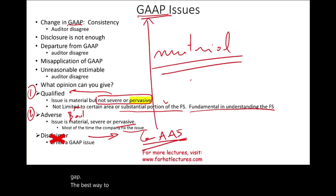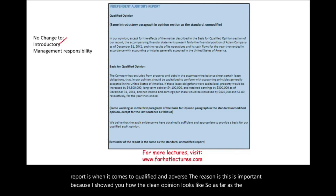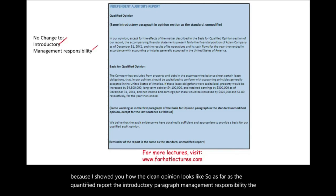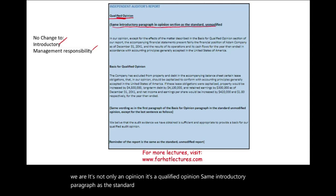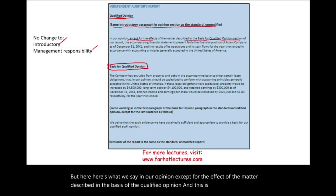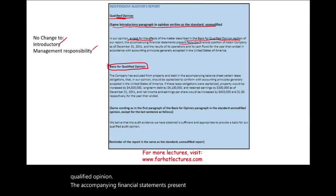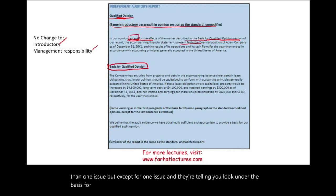Looking at an actual qualified opinion report: the introductory paragraph, management responsibility, and auditor's responsibility sections do not change from the standard report. The opinion paragraph is titled 'Qualified Opinion.' The key language reads: 'In our opinion, except for the effect of the matter described in the basis for the qualified opinion, the accompanying financial statements present fairly.' This means overall the statements present fairly except for one or more specific issues described in the basis paragraph.